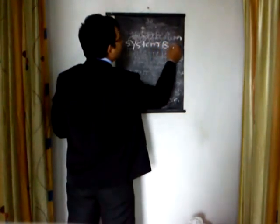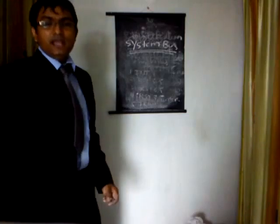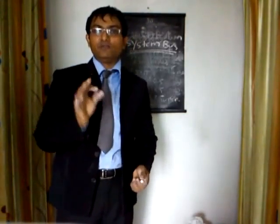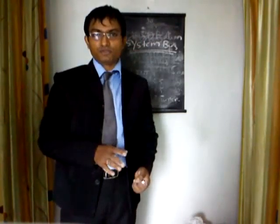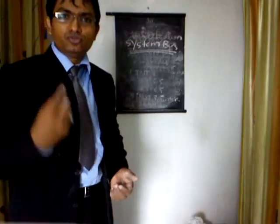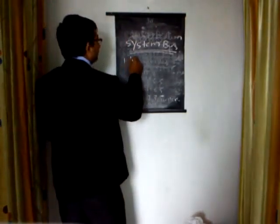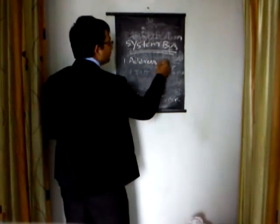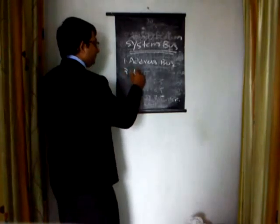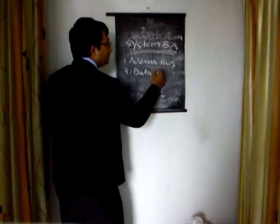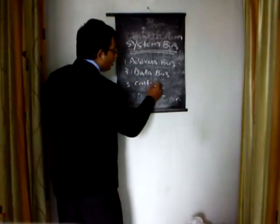In order to communicate with external devices, 8085 uses the system bus. It consists of three types of buses: number one, the address bus; number two, the data bus; and number three, the control bus.